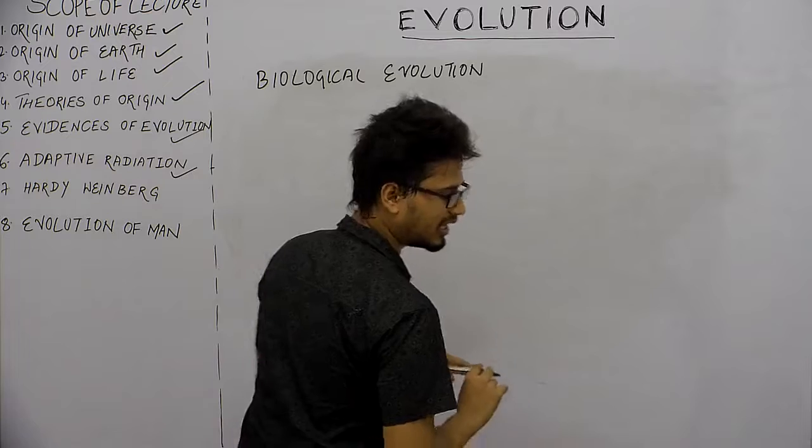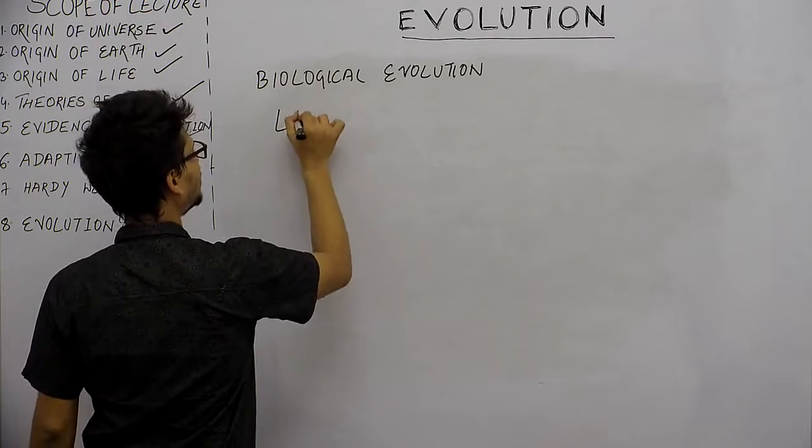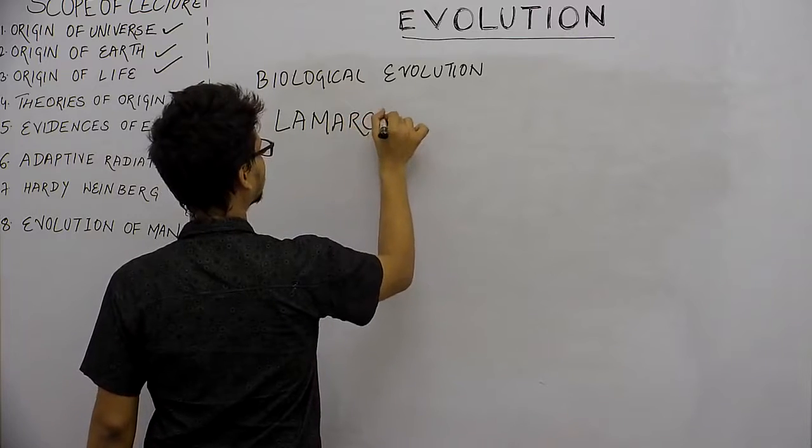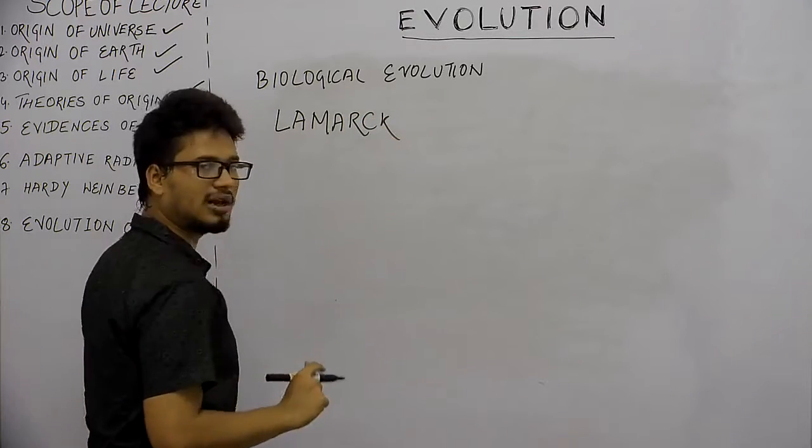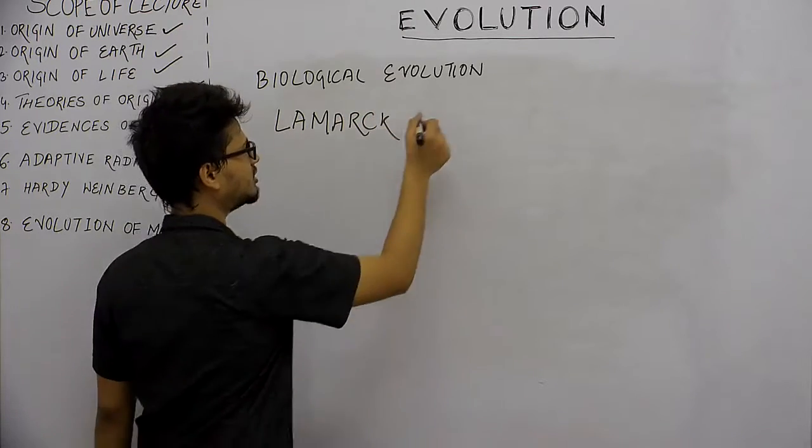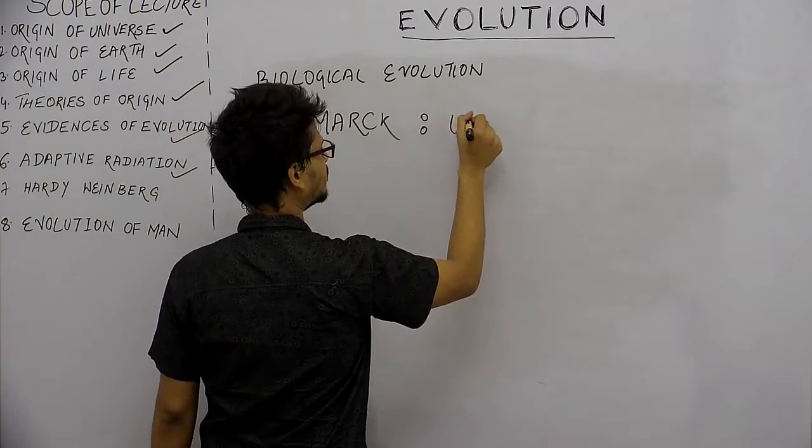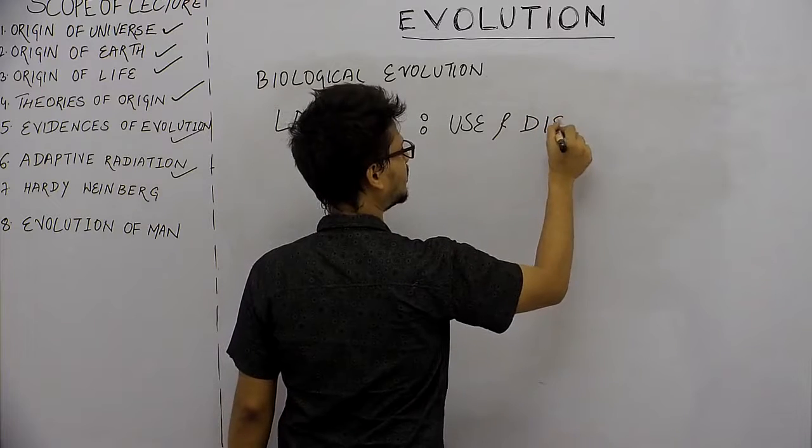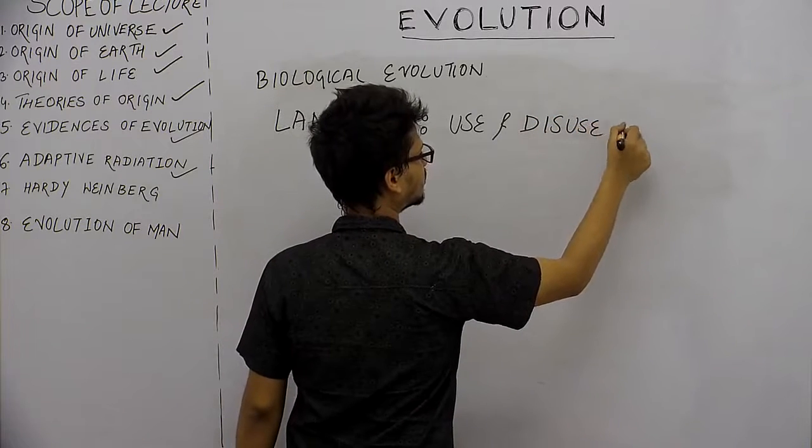Since we are talking about Darwin, there was another contemporary of Darwin known as Lamarck. Lamarck gave a theory called use and disuse theory.